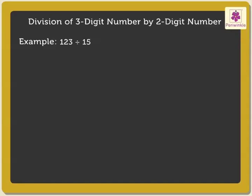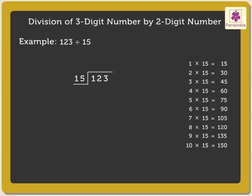Divide 123 by 15. Here, as the divisor is 15, we use the table of 15 to find a product which is equal to or less than and nearest to the dividend, that is, 123. So, the nearest product is 120, as 8 into 15 is equal to 120.